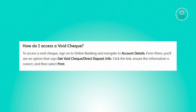To obtain a void check, begin by logging into your online banking account. Once logged in, proceed to the account details section. Within this section, locate and click on the option labeled 'Get Void Check' or 'Order Deposit Info.'